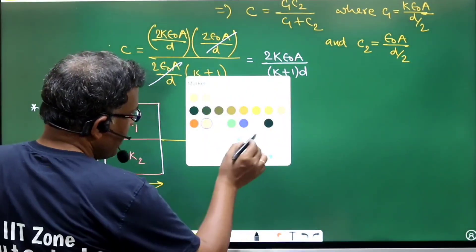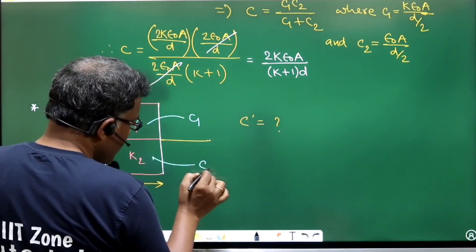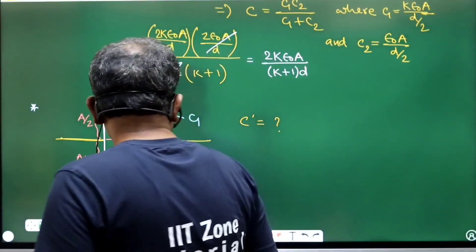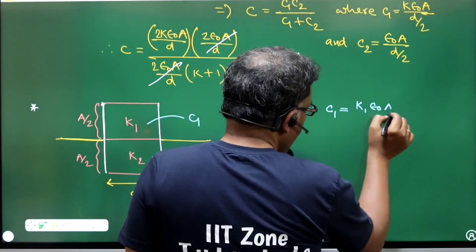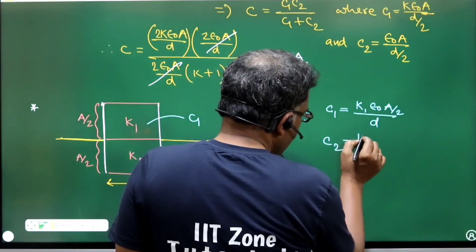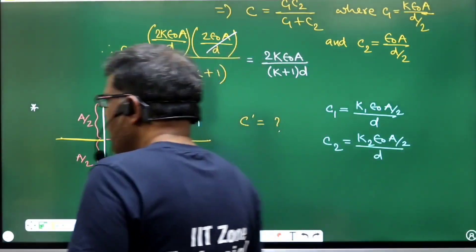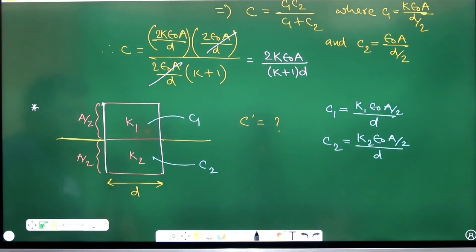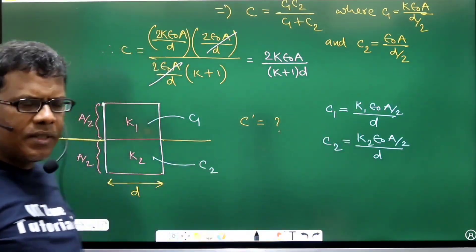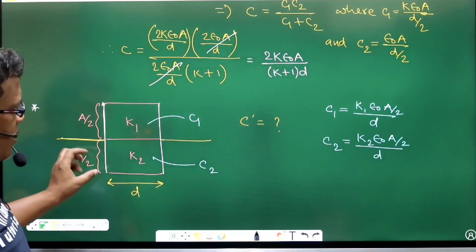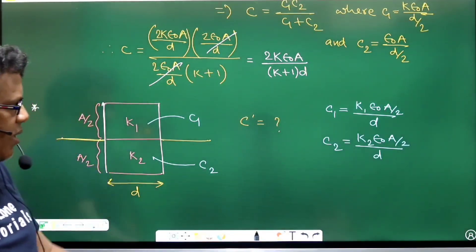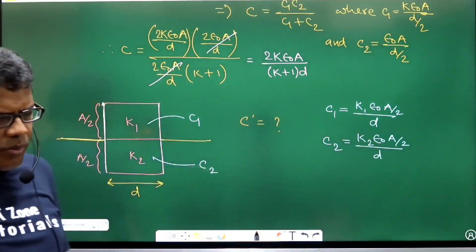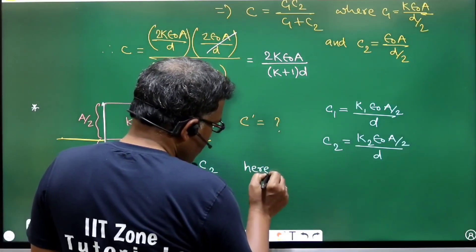There will be two capacitors: C1 and C2. C1 = k1·ε₀·(A/2) / d, because half the plate area is covered by dielectric k1 with full separation d. C2 = k2·ε₀·(A/2) / d, for the other half covered by dielectric k2. Both capacitors share the same plate-to-plate separation d.